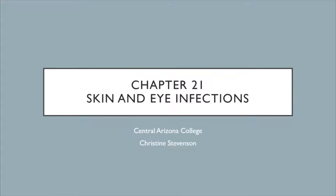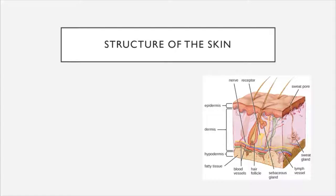Welcome to Chapter 21 on skin and eye infections. From here on out, our focus is going to be on exploring different infectious diseases of the various body systems. In this chapter, our focus is exclusively on the skin and the eyes. These chapters will all have a similar structure. We will start out by discussing the anatomy and physiology of the body system, and then move into a discussion of microbes belonging to different categories that can cause various diseases of that body system.